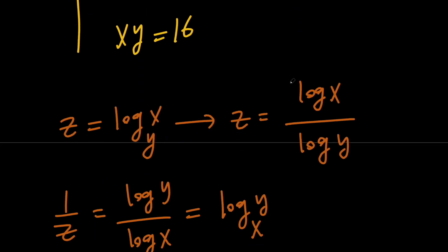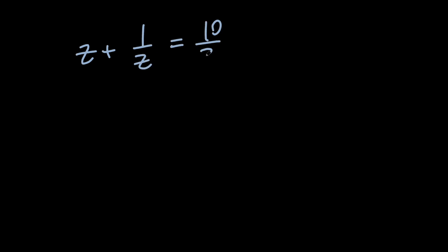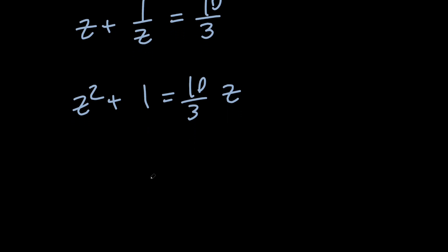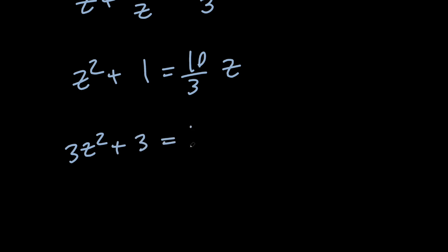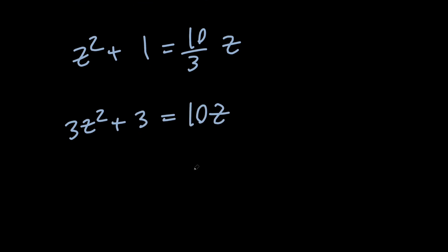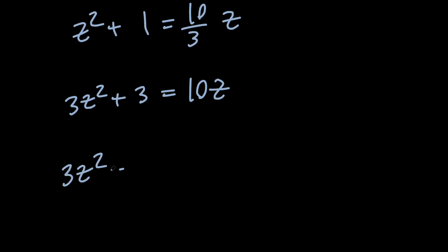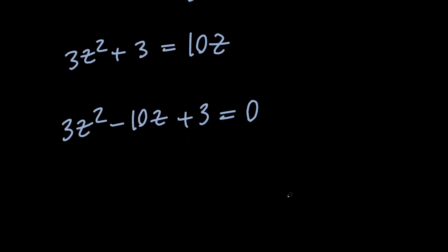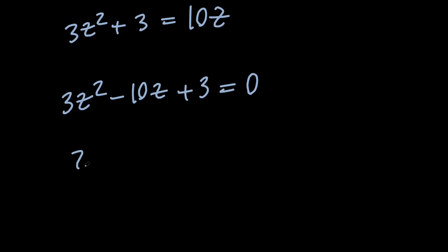So let's go ahead and solve z plus 1 over z equals 10 thirds for z. First, let's multiply everything by z to get a quadratic equation. And then to get rid of the 3 in the denominator, let's multiply everything by 3, to get 3z squared plus 3 equals 10z. Then moving everything to the left hand side gives us 3z squared minus 10z plus 3 equals 0. Feel free to solve this by factoring or the quadratic formula, but either way you get z equals 3 or z equals 1 third.